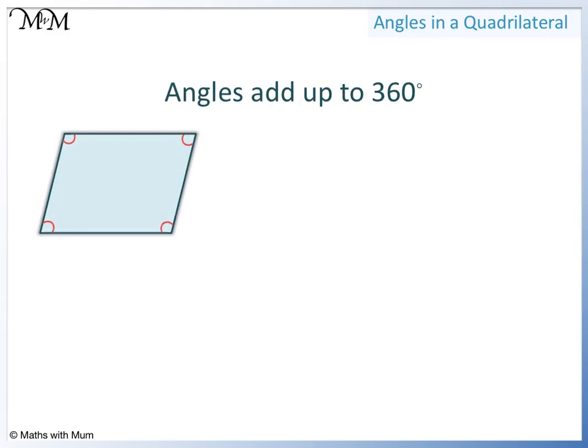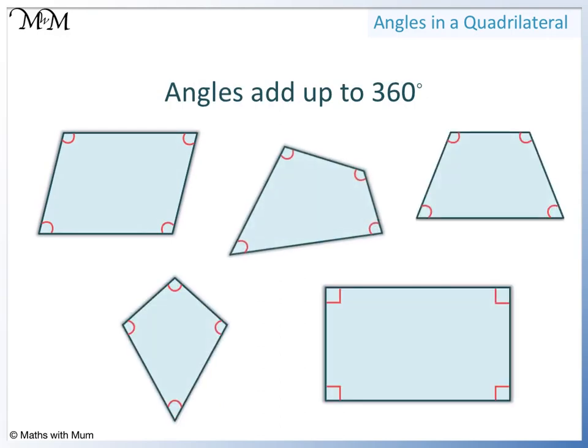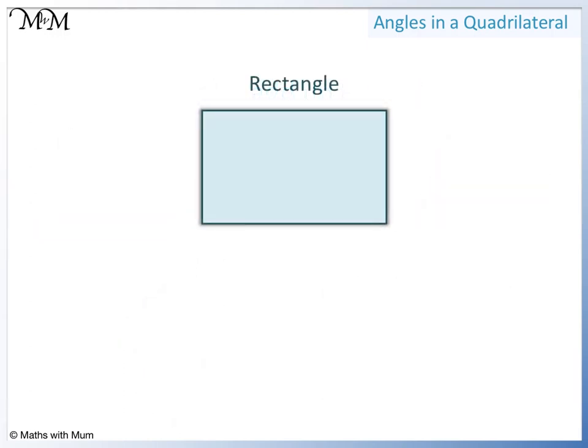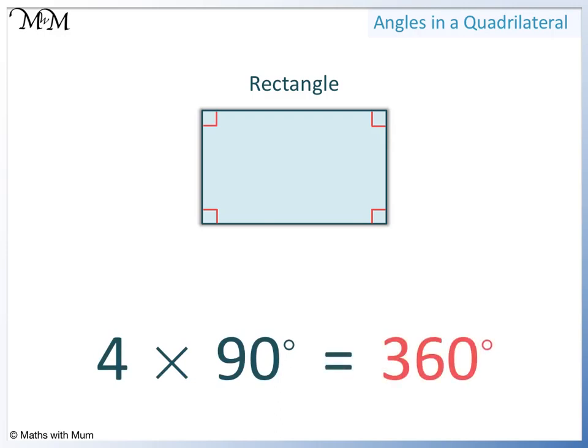In any quadrilateral, the interior angles add up to 360 degrees. We know that a rectangle is made up of 4 right angles. That's 4 lots of 90 degrees. 4 times 90 equals 360.